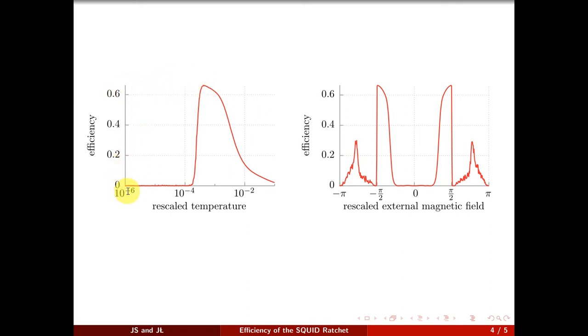We detect an intriguing feature of the thermal external noise enhanced efficiency and show how the efficiency of the device can be manipulated by tailoring the external magnetic flux.